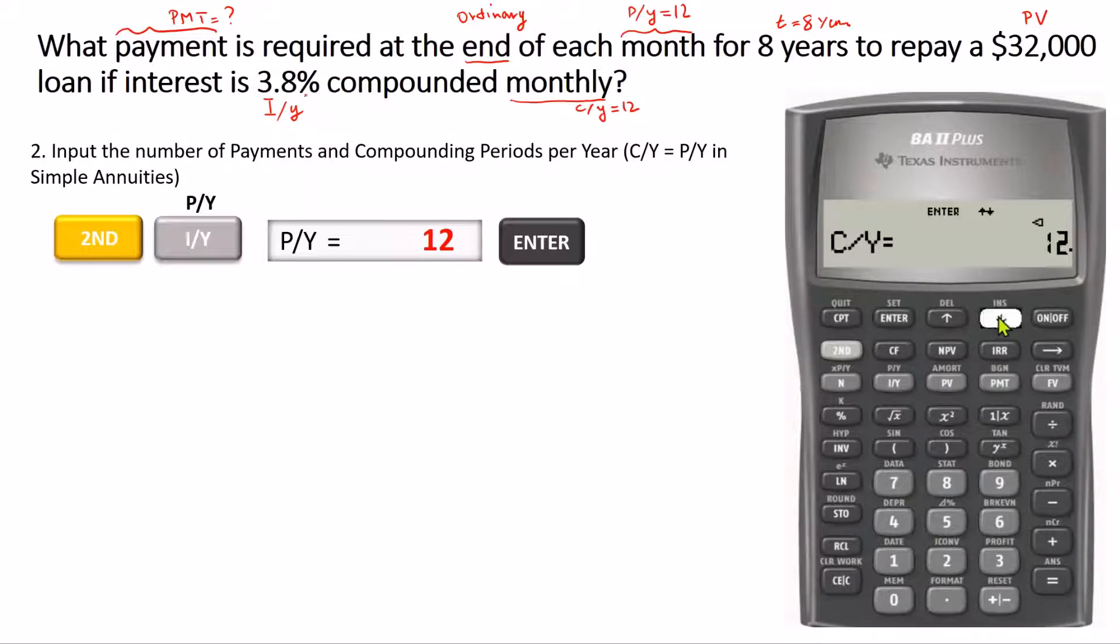So for simple annuity, all you need to do is change P/Y and C/Y changes to the same number automatically. To exit this P/Y C/Y worksheet, press 2nd CPT to activate the quit button. Now let's enter the total number of payments.